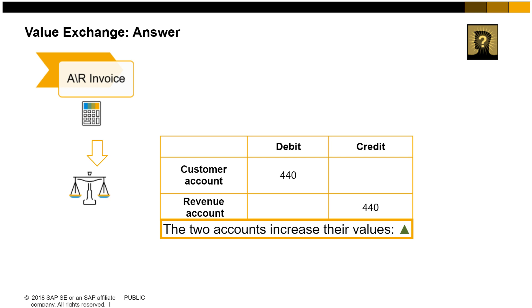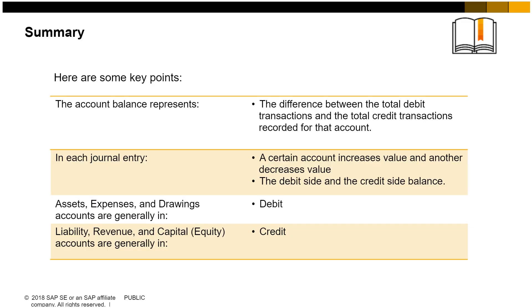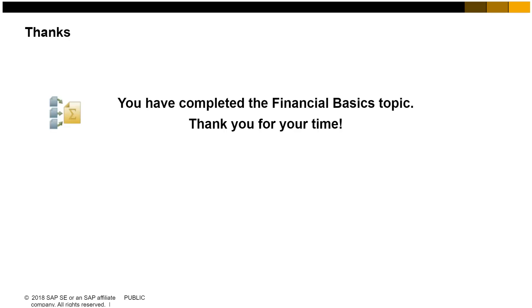Here are some key points to take away. The account balance represents the difference between the total debit transactions and the total credit transactions recorded for that account. In each journal entry, a certain account increases value and another decreases value, and the debit side and the credit side balance. Assets, expenses, and drawings accounts are generally in debit. Liability, revenue, and capital or equity accounts are generally in credit. You have completed the Financial Basics topic. Thank you for your time.